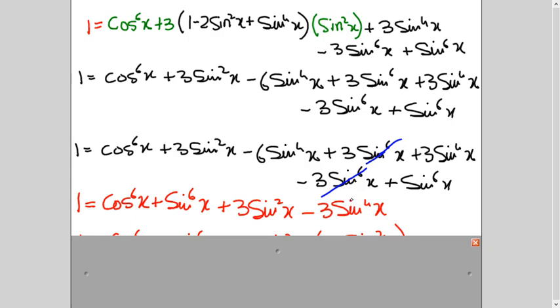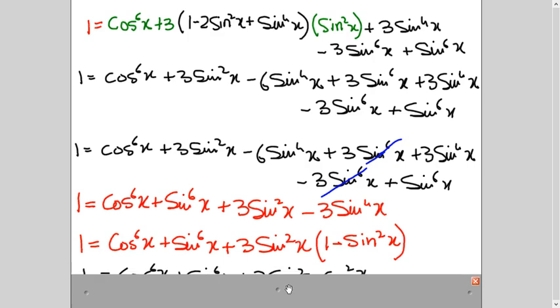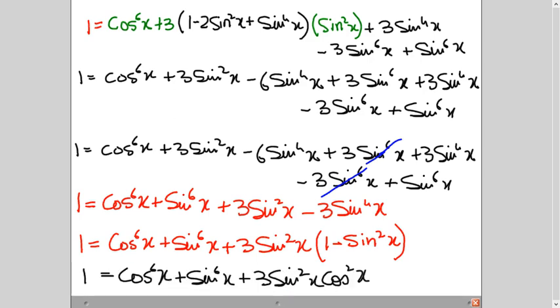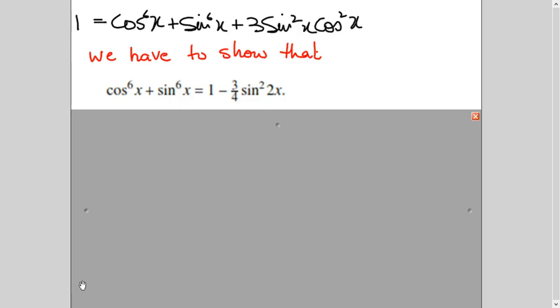So here I have canceled it out. And now this term and this term I will simplify. It will become minus 3. So I have written here -3sin⁴x. Now this sin⁶x I am taking here. So I have written them together. This is what we have to prove. So this part is coming here. And then you will add this with this. It will become minus 3. After that what comes in your mind?